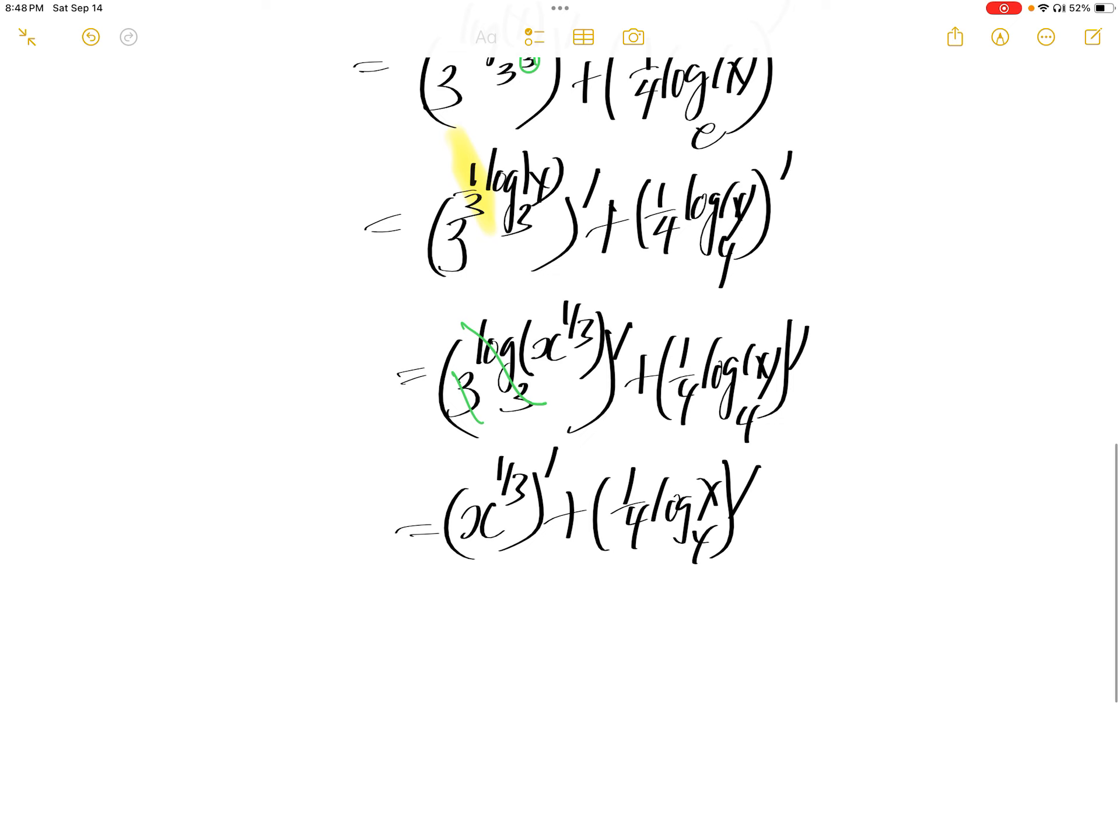The derivative of x to the power of one third is one third comes down, x, one third minus one is negative two thirds, using the power rule.